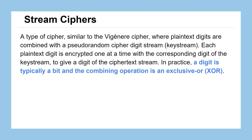A stream cipher is a type of cipher pretty similar to what we've seen already, especially the Vigenère cipher, where our plain text gets converted to digits — in this case binary digits — and then combined with a pseudo-random cipher digit stream called a key stream.